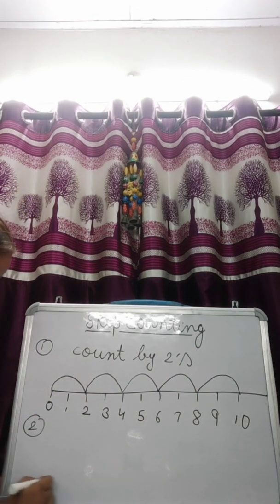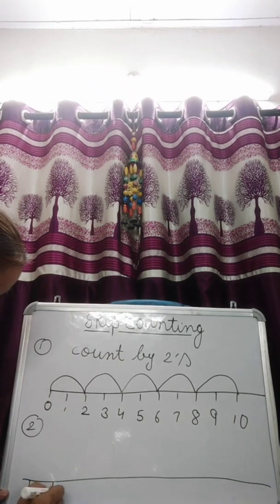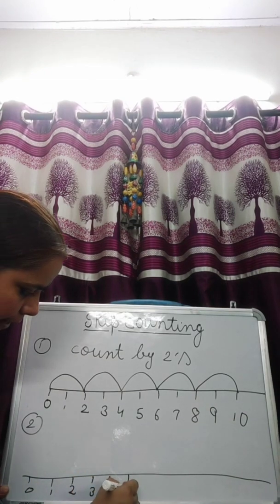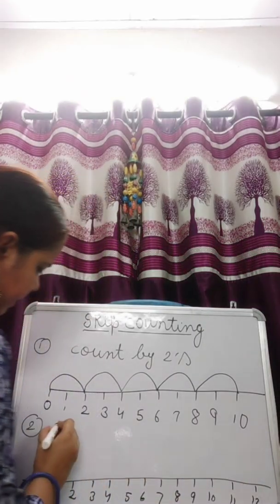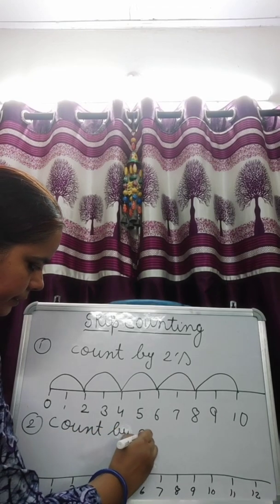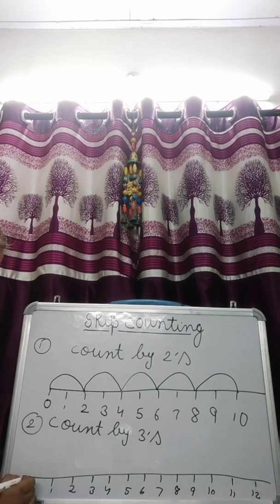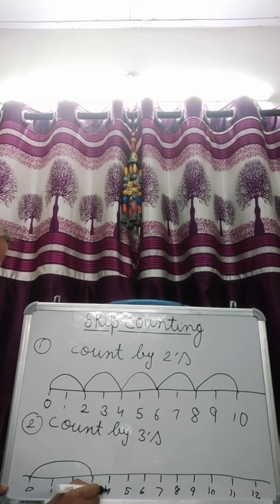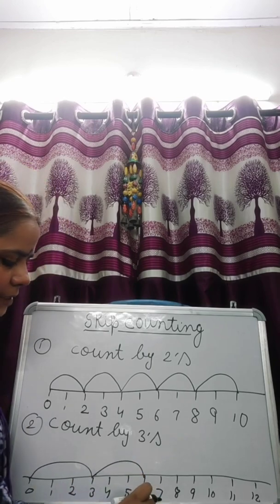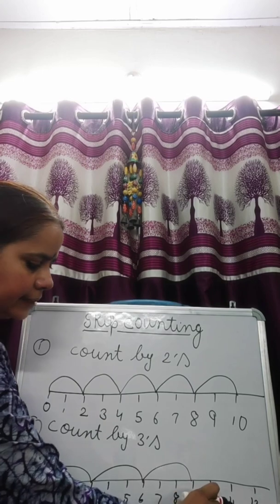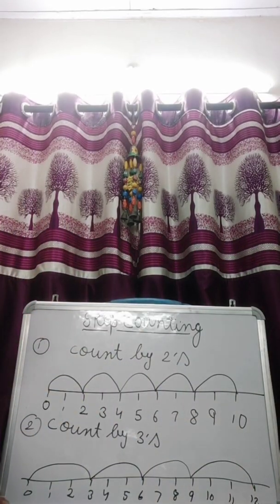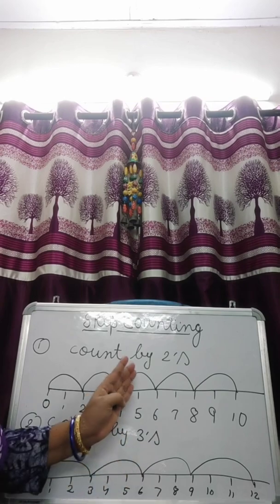Now, ma'am is going to do count by threes on a number line from zero to twelve. From zero, I will skip first number, second number, and move to third number — that is three. From three, skip four and five and move to six. Skip seven and eight and move to nine. Skip ten and eleven and move to twelve. This is skip counting by threes on the number line.